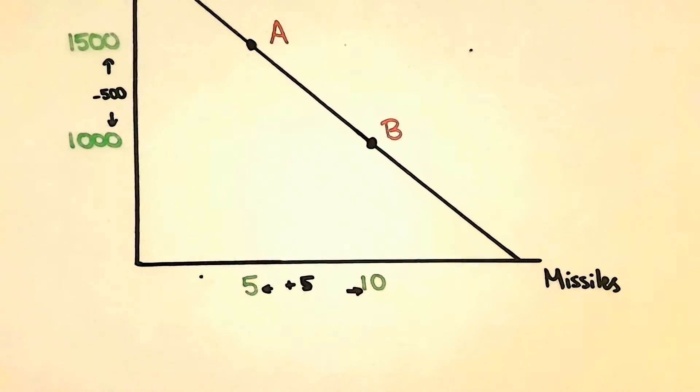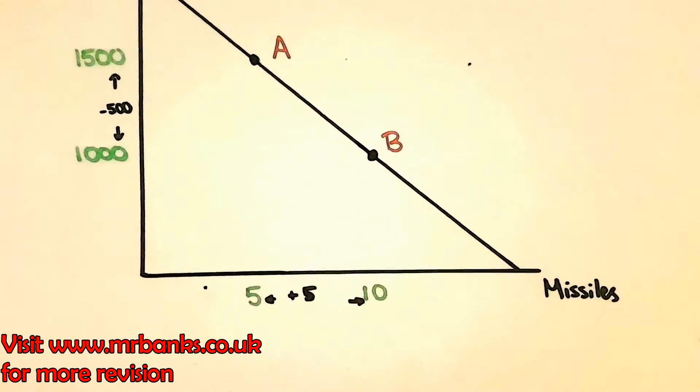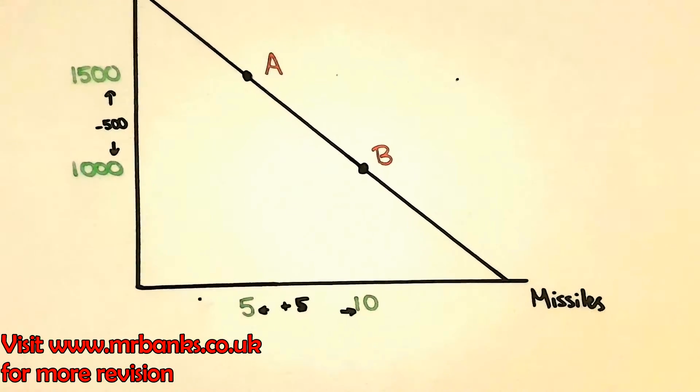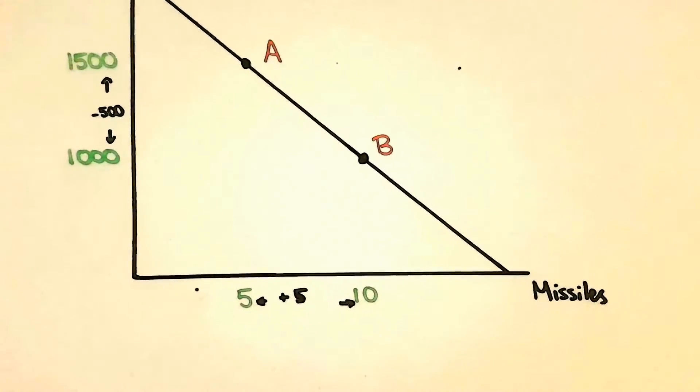What happens if we operate at point B instead? If we operate at point B we have to make a choice. We have to decide if we should give up guns to make more missiles. In this case we have to give up 500 guns to produce 5 more missiles.